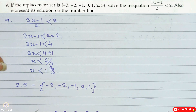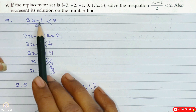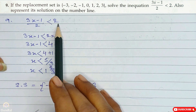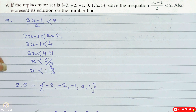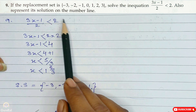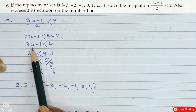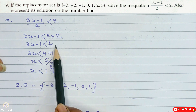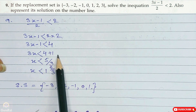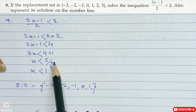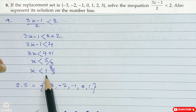Question number 9. If the replacement set is minus 3, minus 2, minus 1, 0, 1, 2 and 3, solve the inequation 3x minus 1 by 2 less than 2. First solve the inequation: cross multiply, so 3x minus 1 less than 2 into 2, giving 3x minus 1 less than 4. So 3x less than 4 plus 1, hence x is less than 5 by 3, which is 1 and 2 by 3.